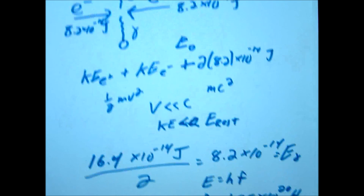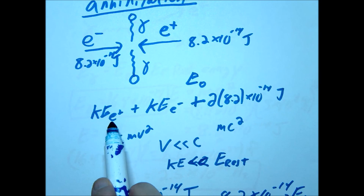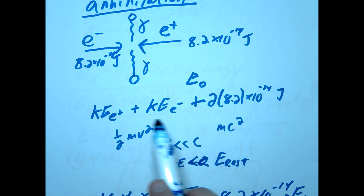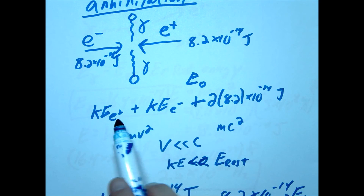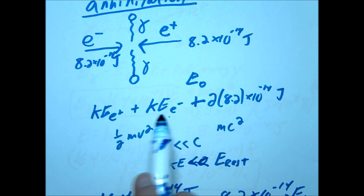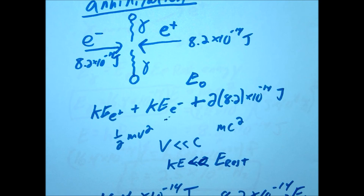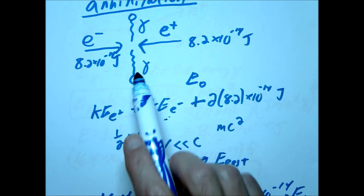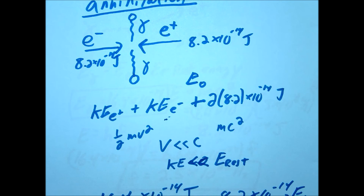If these velocities start to get high — say 10 to the 7th or even 10 to the 8th — then you would have to take into account that kinetic energy, and that would adjust the result slightly. In that case, the energy of the gamma rays would be greater, as well as their frequencies.